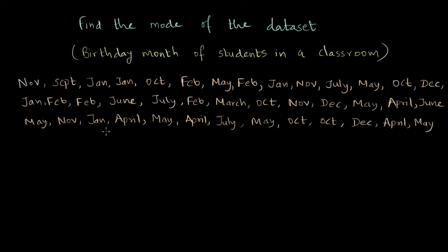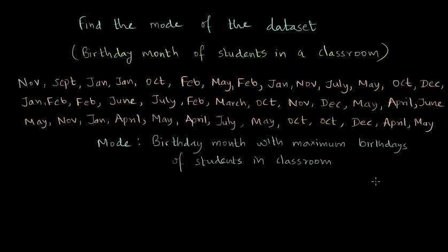What would the mode really mean in this case? This would mean the month which appears most of the time in the dataset, which is basically the birthday month of maximum students in the classroom. The mode would be the birthday month with maximum birthdays. How do we find the mode? We have to count how many times each month appears, and there is an interesting method called tally marks.